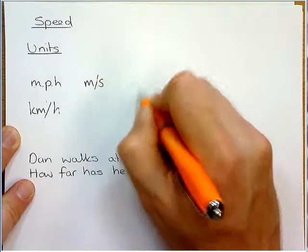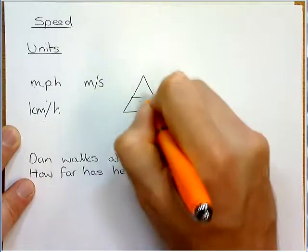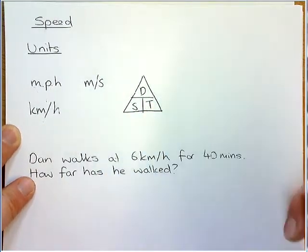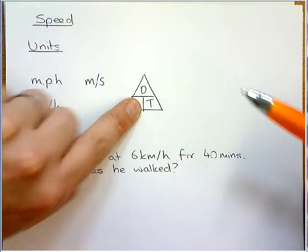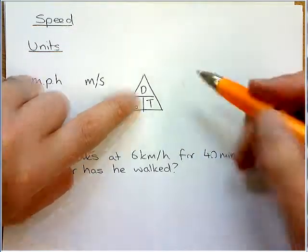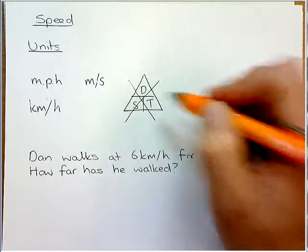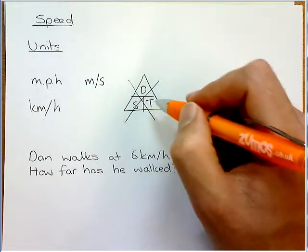However, from your science lessons and of course maths lessons as well, you often learn this little triangle. So, to calculate speed, you cover up the S, and that would be distance divided by time. But I would advise you to never ever use it, unless you have to, because by using this, this is where people go wrong.